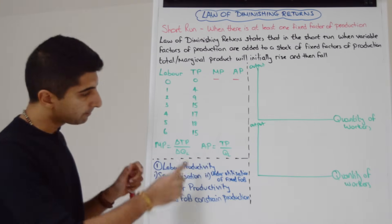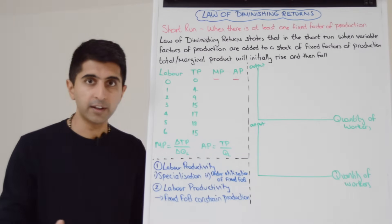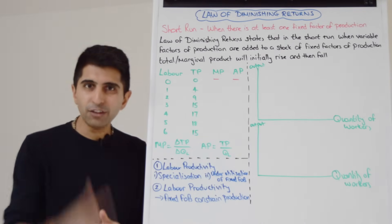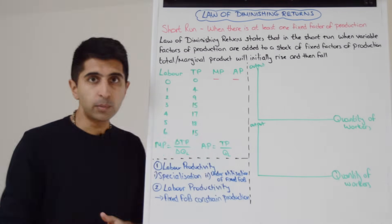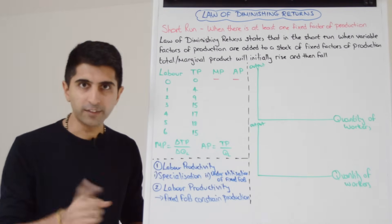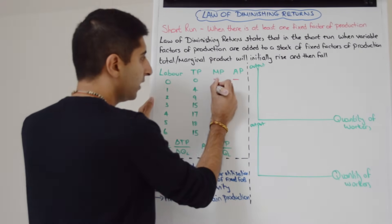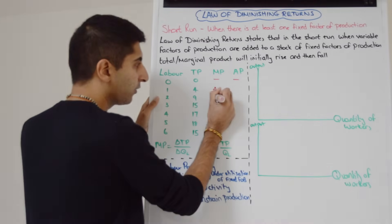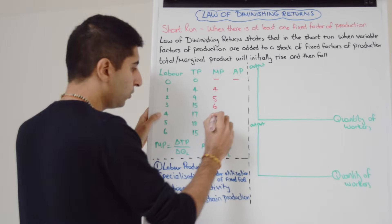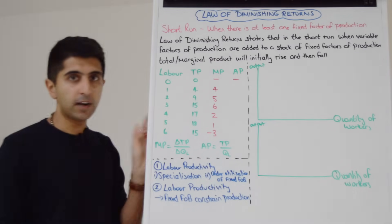What we want to work out is the marginal product and average product. The equation for marginal product is the change in total product divided by the change in the quantity of workers. Just think of marginal as extra — the extra output when we employ one more worker. In this case the change in quantity of workers is always one, so it's simply just the change in TP. The marginal product when we employ the first worker is four, the second worker brings in an extra five, the third an extra six, the fourth an extra two, the fifth one, and when we employ the sixth worker, minus three.